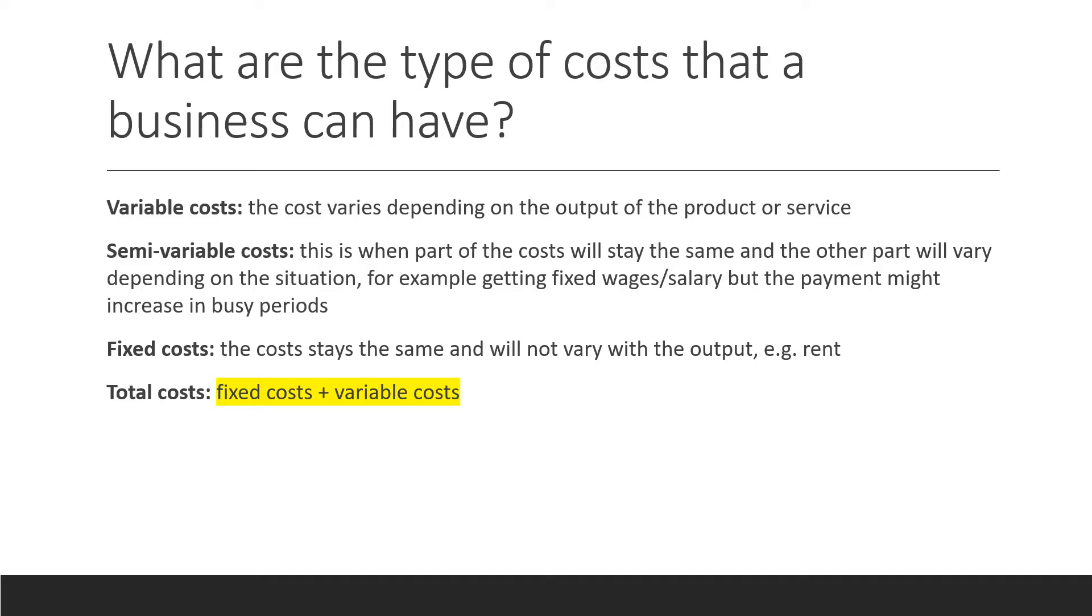Fixed costs, that's costs that stay the same and will not vary with the output. For example, rent. And then there's total cost. To work out total cost, you do fixed cost plus variable cost.